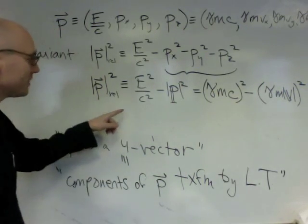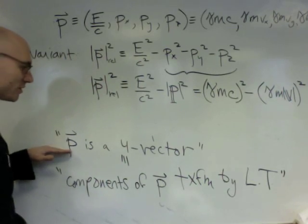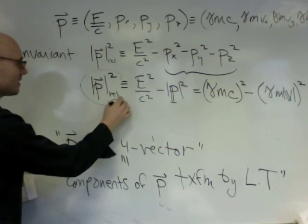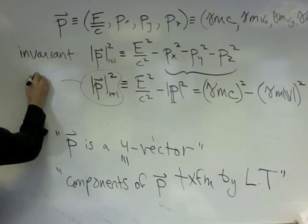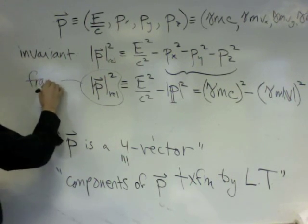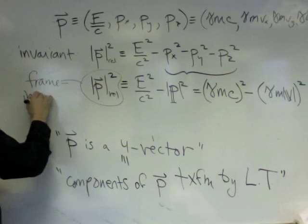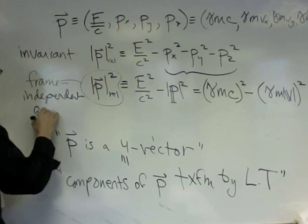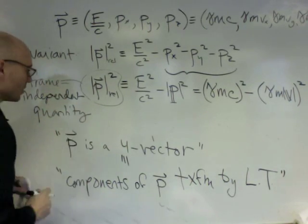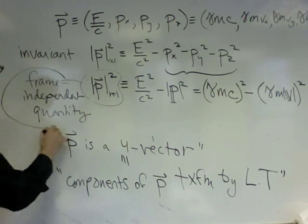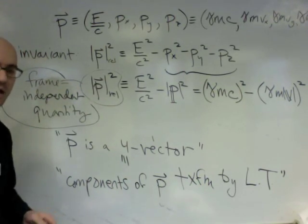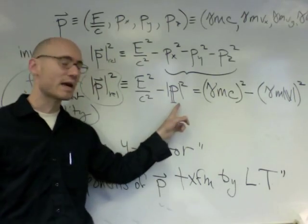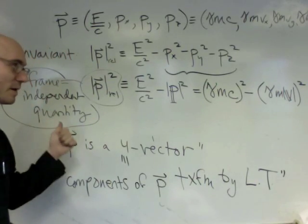And if it's true that P is a four vector, then it transforms by the Lorentz transformation, then this thing here is a frame-independent quantity. So that might be like, oh yeah, whatever, who cares. But remember, this is a surprising thing, to be able to take a momentum and make a frame-independent quantity.